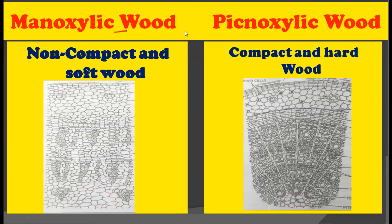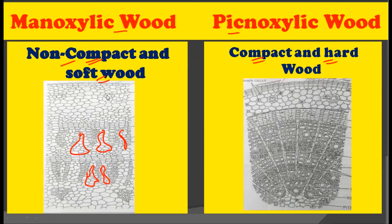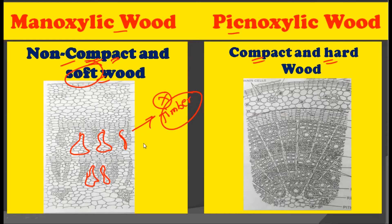The third difference is that Manoxylic wood is a non-compact and soft wood. In the picture, you can clearly see there are lots of patches of parenchymatous cells in between. Due to the large amount of parenchymatous cells, this wood becomes non-compact and soft in nature. This is the reason why Manoxylic wood is not used for timber purposes and does not have any economical importance or suitability for construction.